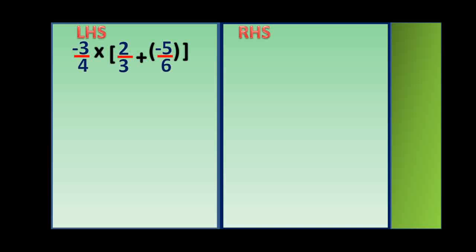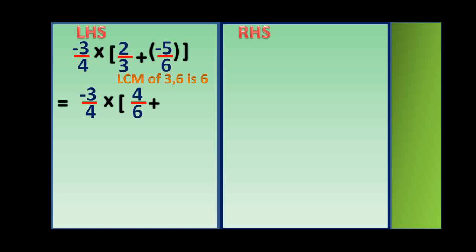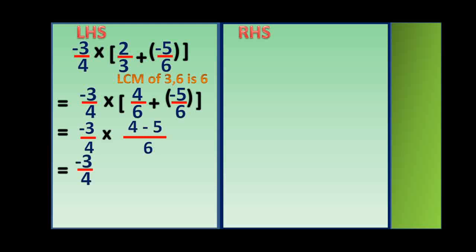So we have to take the LCM of 3 and 6 because we have to add the rational numbers 2 by 3 and minus 5 by 6. The LCM of 3 and 6 is 6. So minus 3 by 4 into the equivalent rational number of 2 by 3 is 4 by 6, plus minus 5 by 6. This gives minus 3 by 4 into (4 minus 5) by 6. Since 4 minus 5 is minus 1, it becomes minus 3 by 4 into minus 1 by 6.